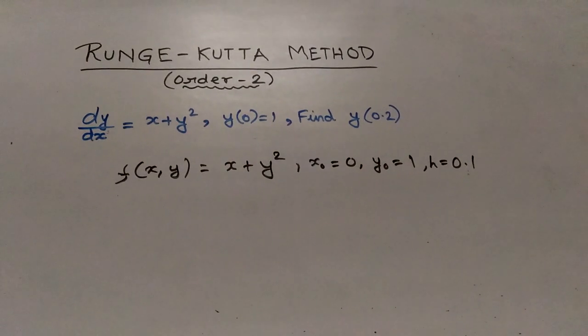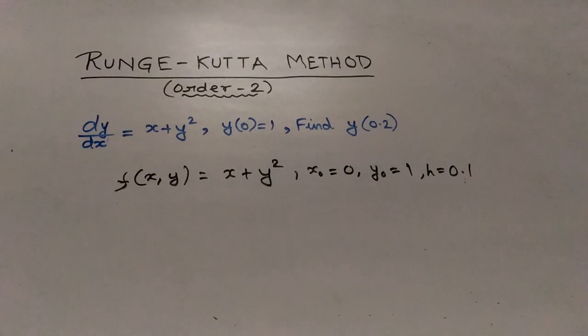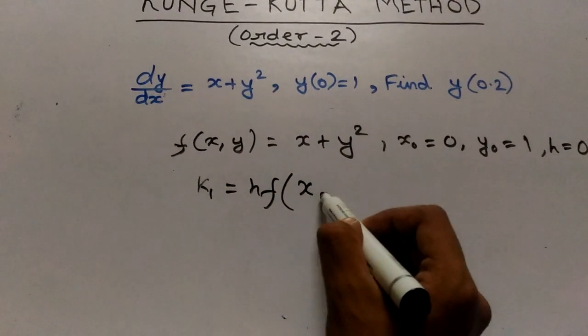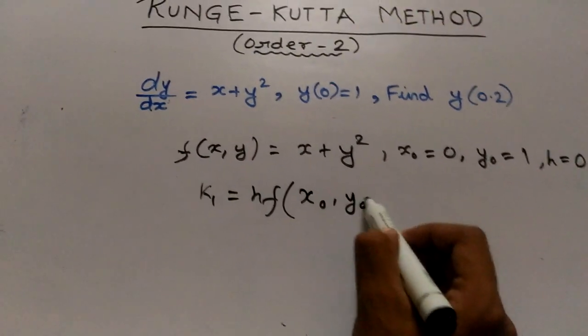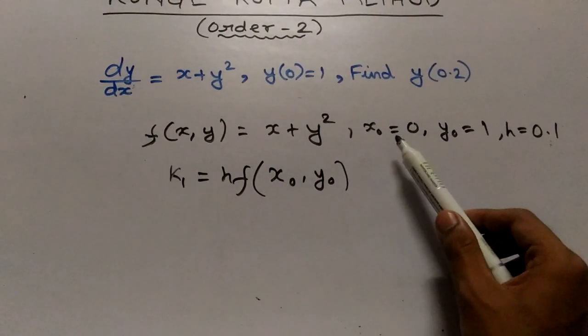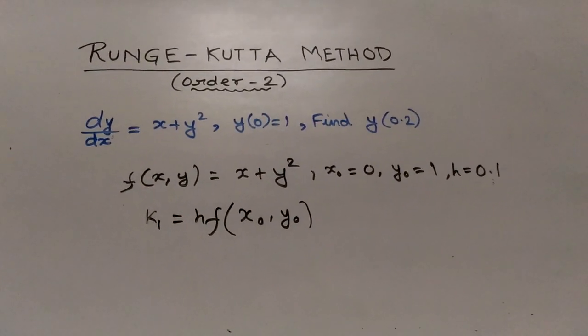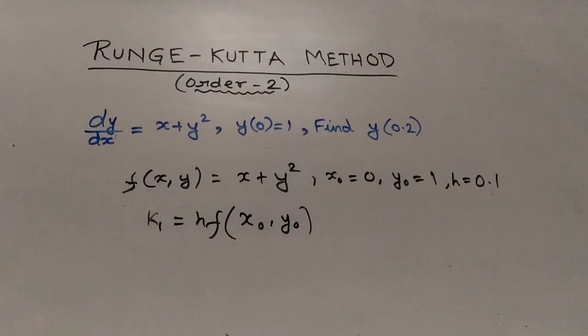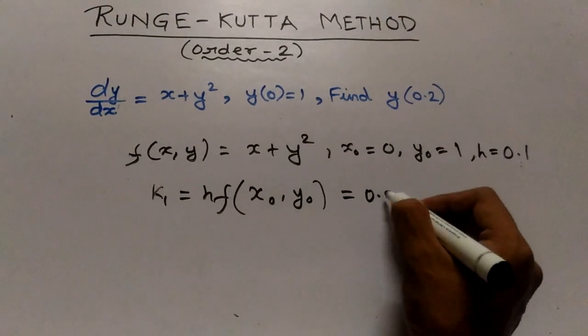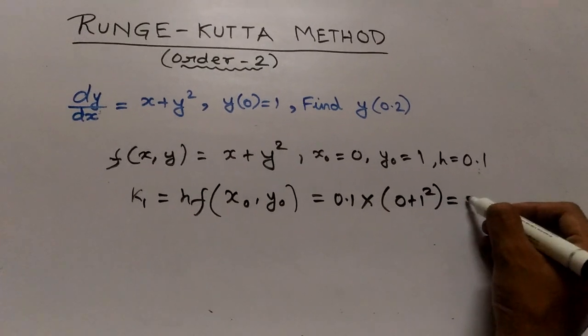Now we will calculate the value of K1 and K2 for y1. K1 is HF(x0, y0). Since we have already got our x0 and y0 values and we need to calculate our y1, therefore our xN minus 1 and yN minus 1 will be x0 and y0 respectively. So it is 0.1 into 0 plus 1 squared, that is equal to 0.1.